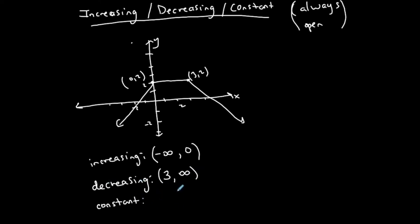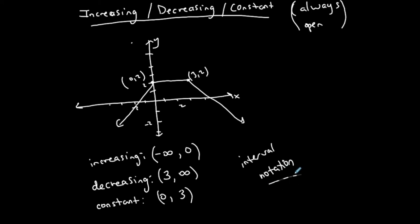A constant interval means as x goes up, y stays the same — a straight horizontal line. Not every graph has all these intervals; some increase all the time, some decrease, some increase and decrease but aren't constant. This function is constant from x = 0 to x = 3, written as the open interval (0, 3). Be careful — this looks like an ordered pair, but it is not. It's an interval of x-values from 0 to 3. So: increasing on (−∞, 0), decreasing on (3, ∞), and constant on (0, 3), all in terms of x.